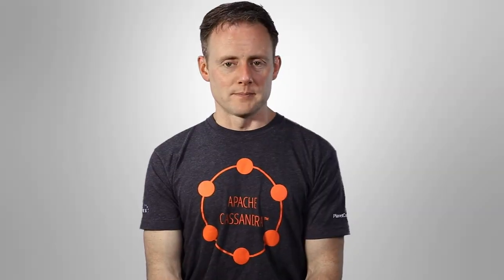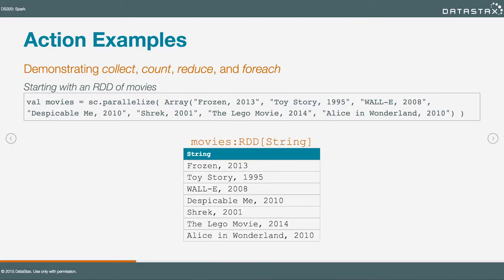Let's look at an example. This is the data we're working with: we have seven elements — they're movies, simple strings with a title, a comma, and a release year — all created from a list literal that's parallelized into the Spark context and made into an RDD.